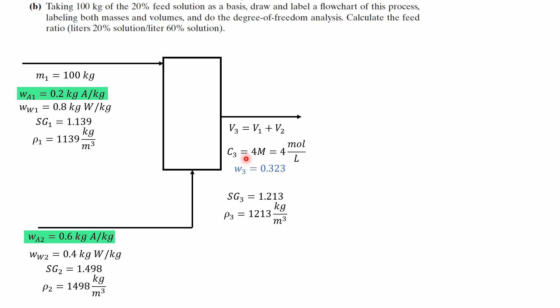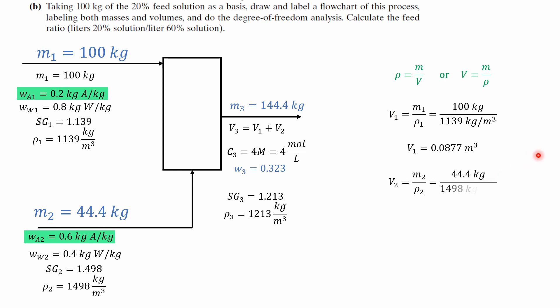Now that we solve for these we can replace them in our system diagram for mass 1 mass 2 and mass 3 and now we need to calculate the feed ratio which we can do by using the definition of density and calculating the volume of the species in the first one by using the density.